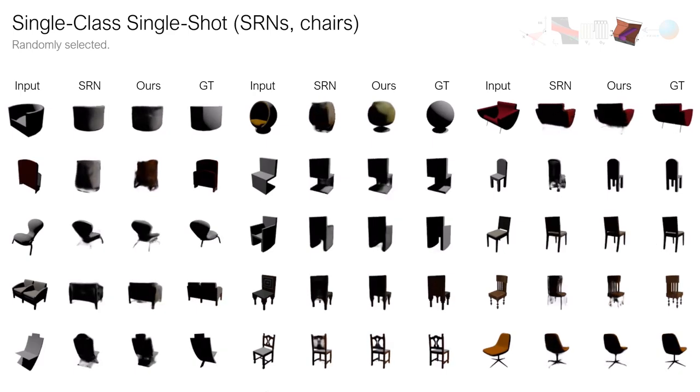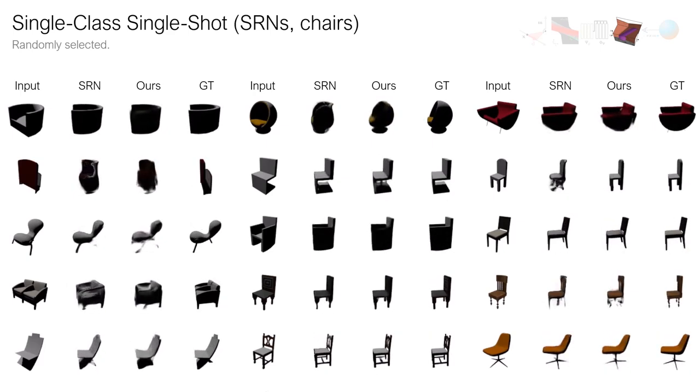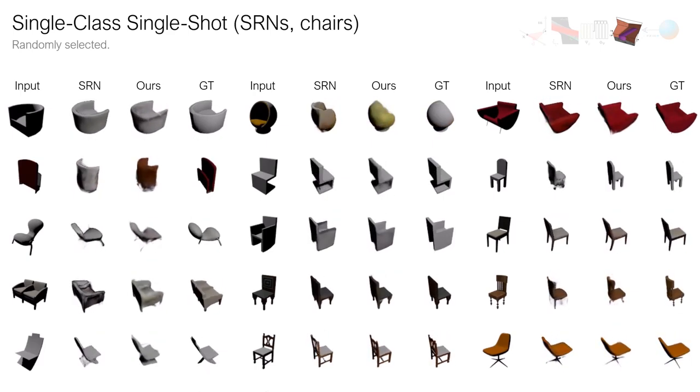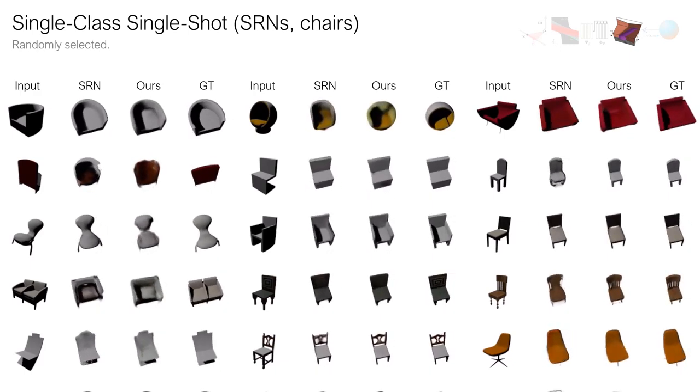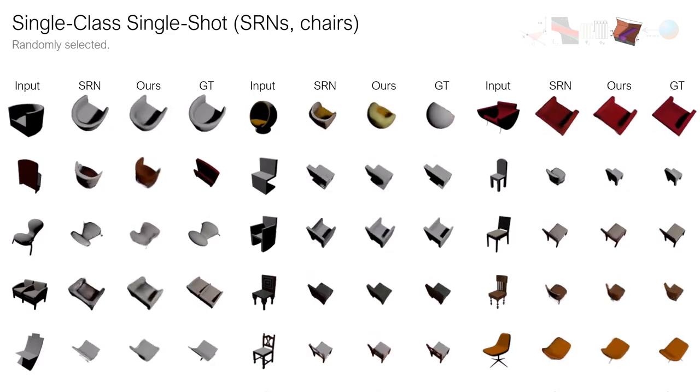On chairs, LFNs outperform SRNs in terms of SSIM, but perform slightly worse in terms of PSNR. Qualitatively, however, reconstructions are reasonable, though we find multi-view inconsistencies with objects far from the training distribution.